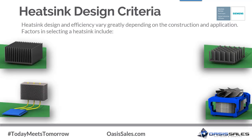Heat sinks come in many shapes and sizes. The upper left is a plate fin heat sink, the primary type we will focus on. Upper right is a pin fin heat sink, which has advantages over plate fin for some scenarios. Lower left is a heat spreader using heat pipes to move heat from the spreader to a fin stack in forced air. Lower right is an active heat sink with an integrated fan supplying high-speed air to transport heat away.